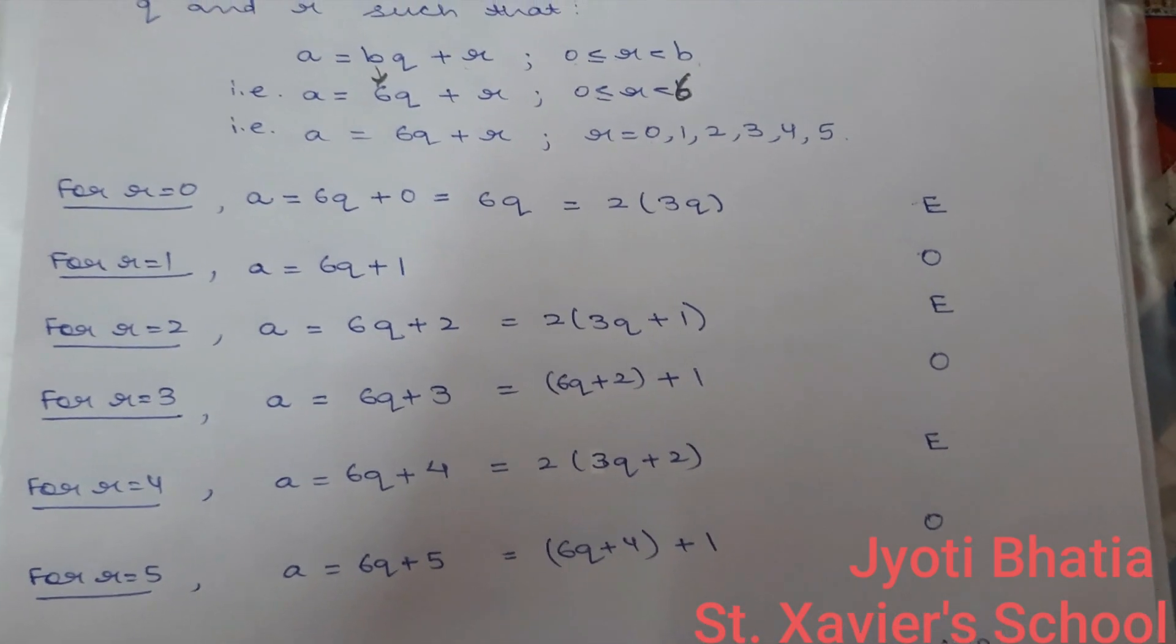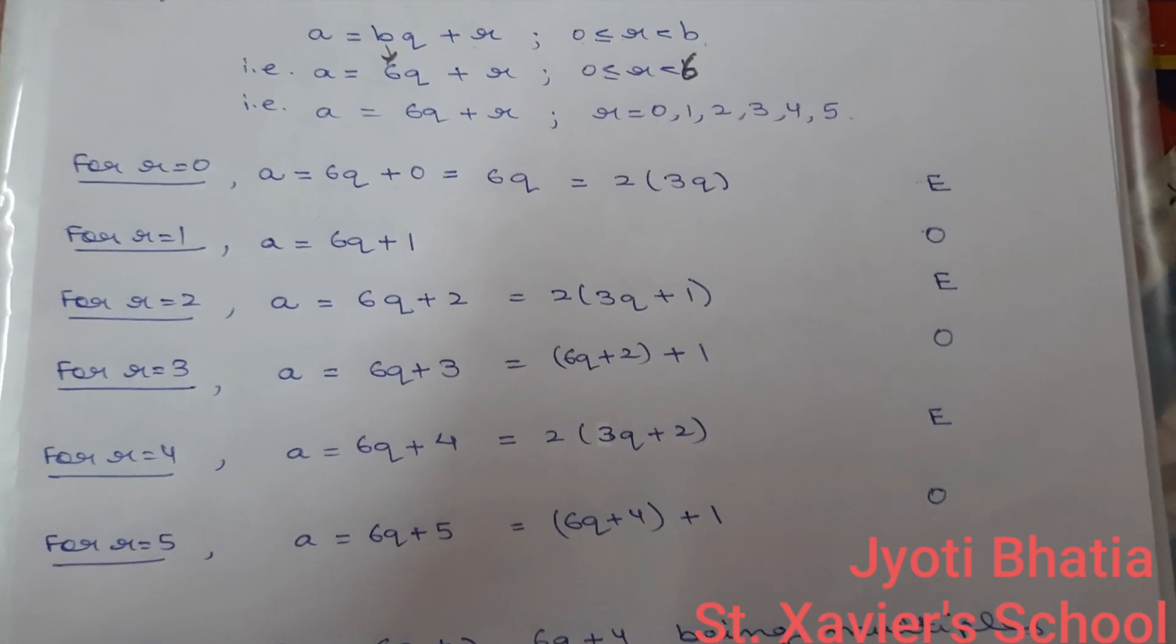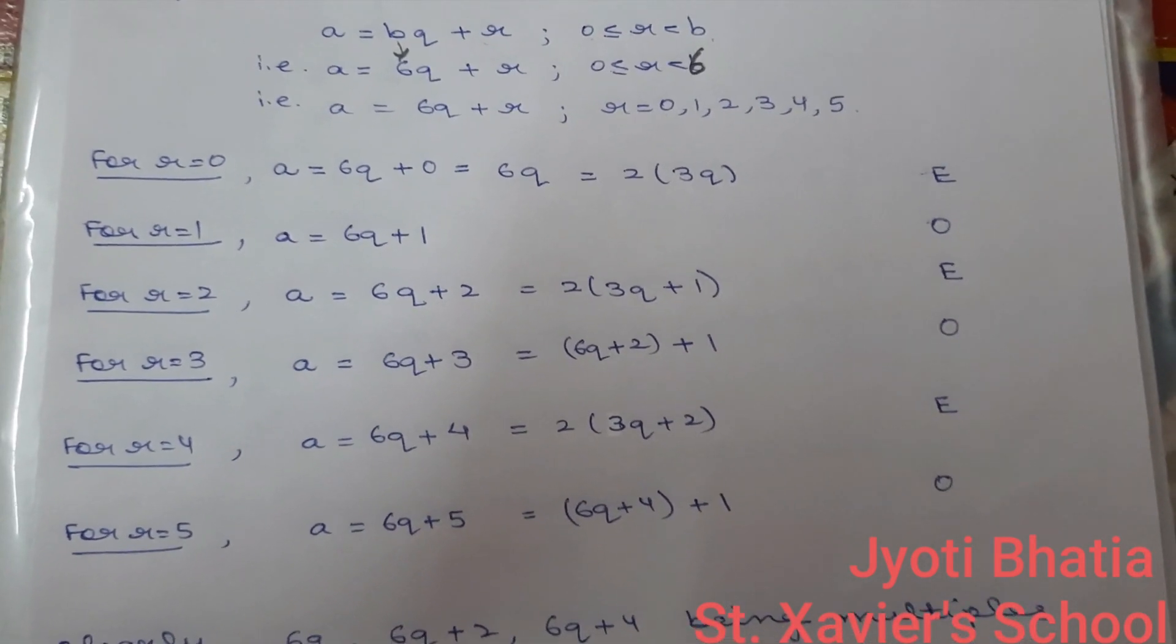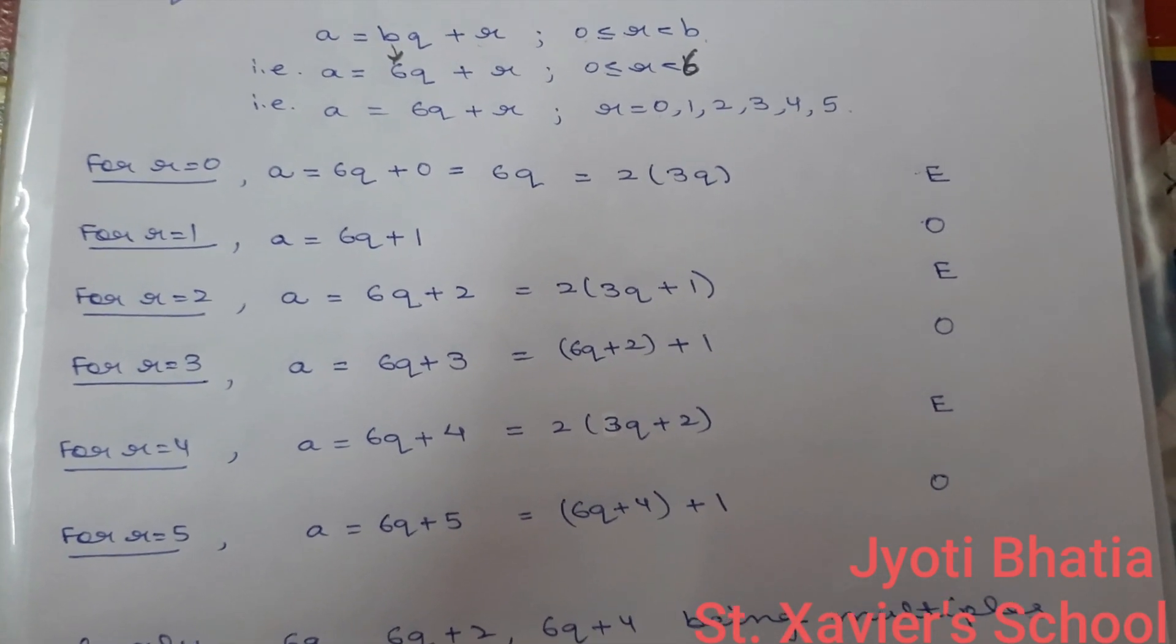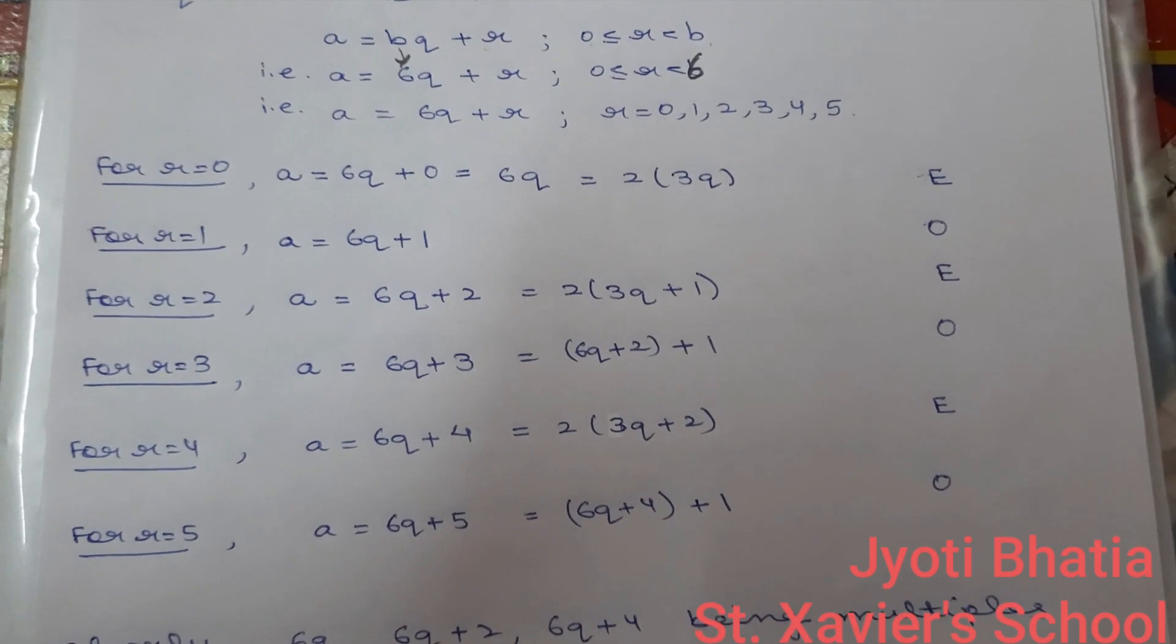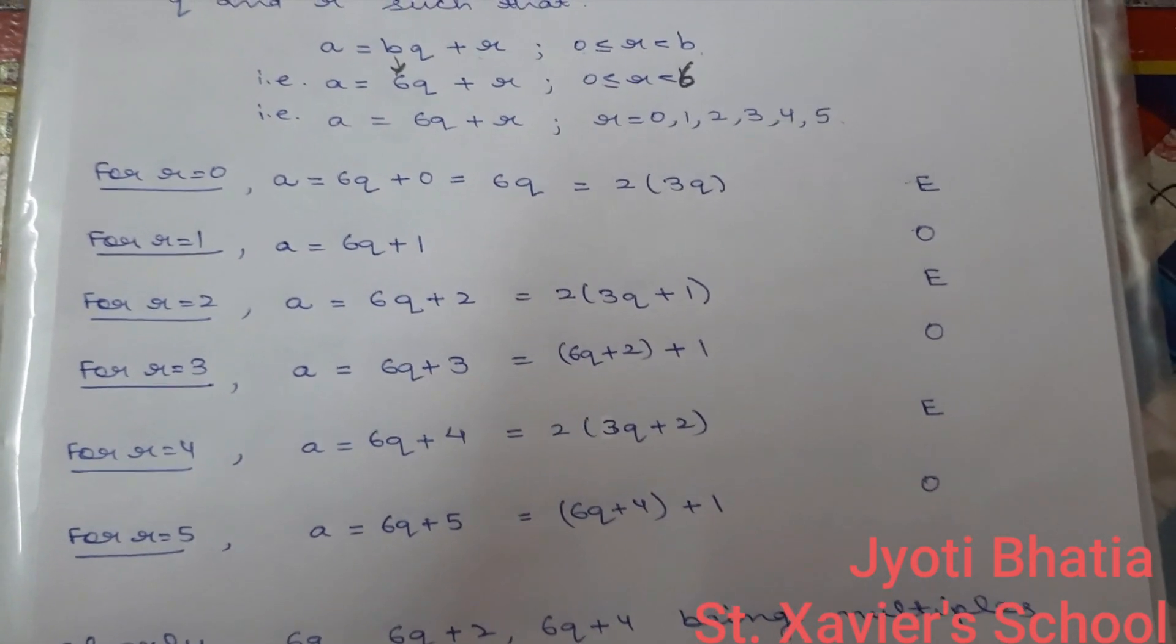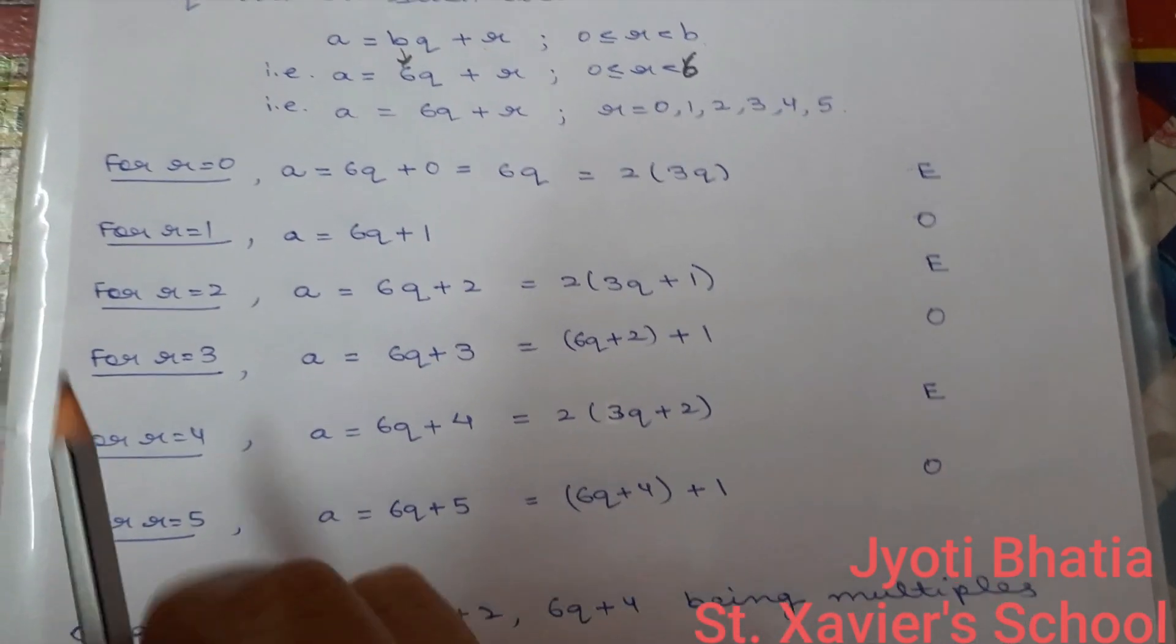To prove even integer, we shall show that number is a multiple of 2. And to show that the integer is odd, we will always follow the criteria of even number plus 1. Even number plus 1. So, now let us start.